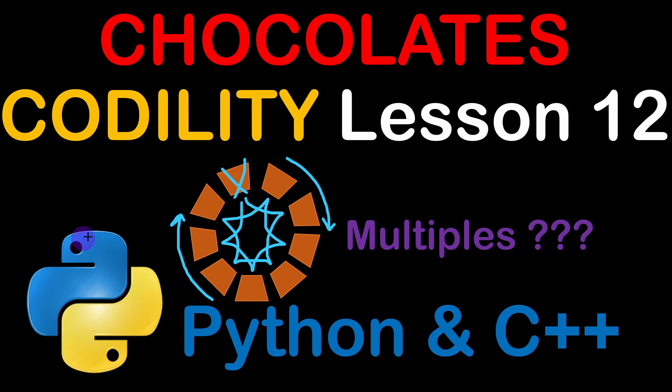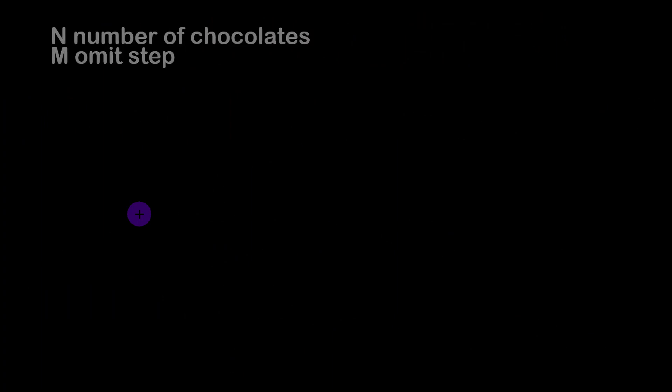We are given two numbers. The first one is the number of chocolates arranged in a circle, and then we start by eating the first chocolate with index 0. Then we have to jump to another chocolate, omitting a certain number that is also provided by the problem, which is noted here as M, the omit step.